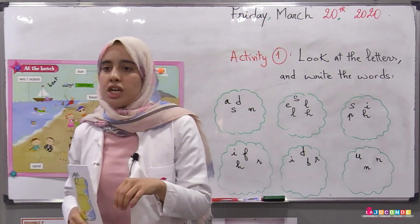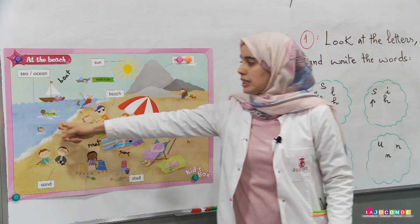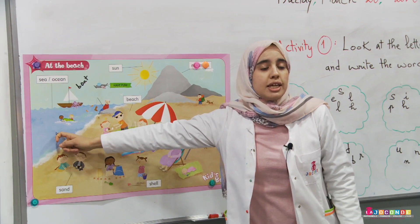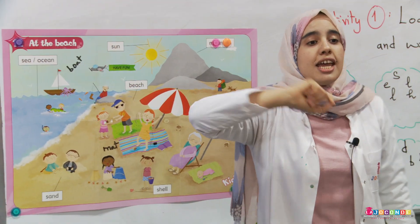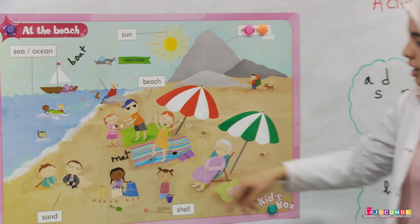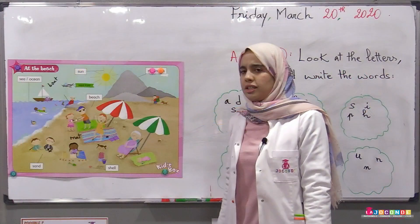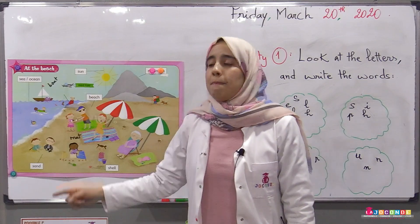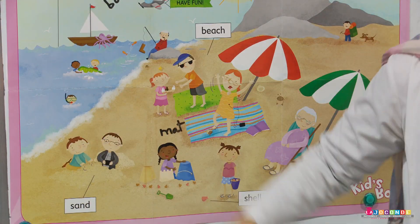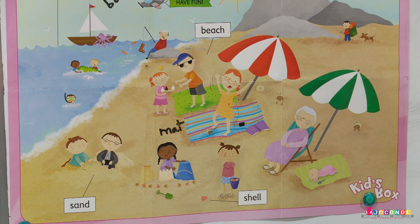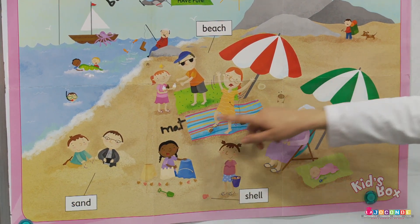Here you have words — vocabulary about the beach. Look here: you can see a sea. And here you have some children. What are they doing? They are playing. And look at those ones — they are swimming. Great!